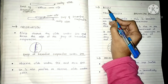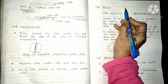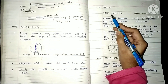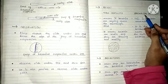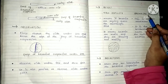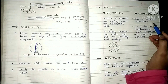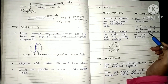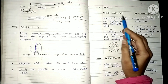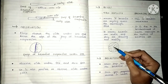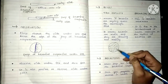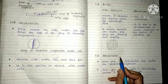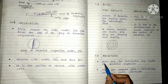When interpreting results, it is very important to differentiate between true motility and Brownian motion. Brownian motion is a random movement caused by the bombardment of water molecules on the surface of bacterial cells. True motility means bacteria are actively moving across the microscopic field, indicating they are genuinely motile.